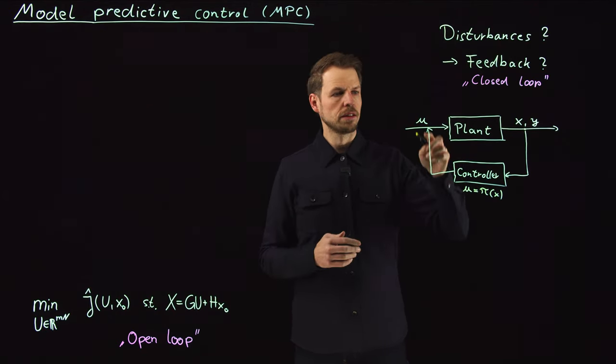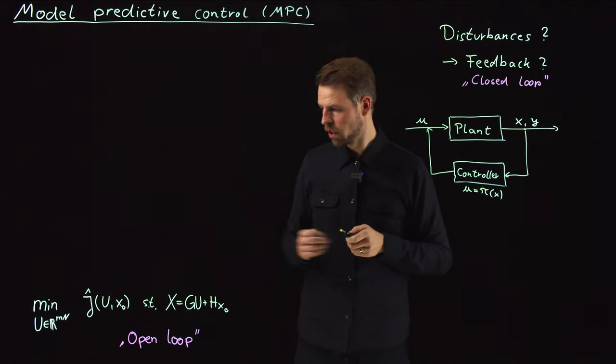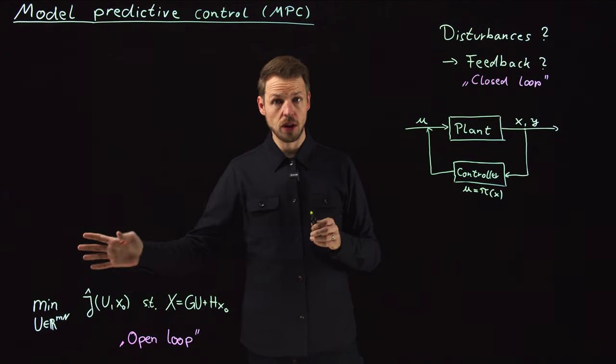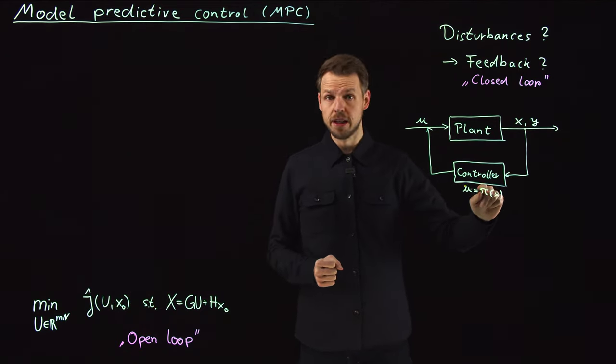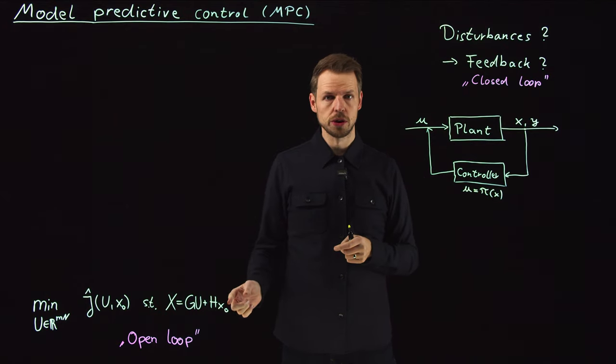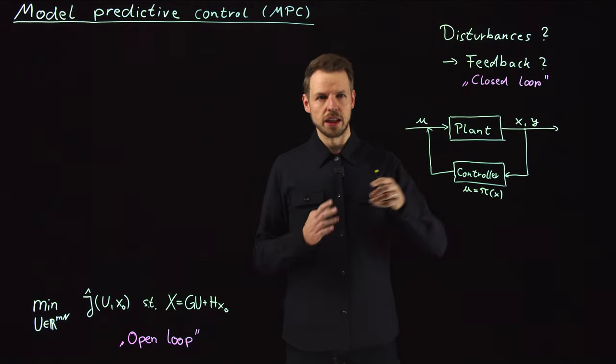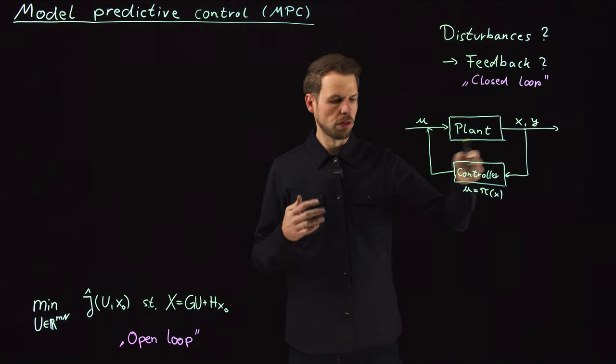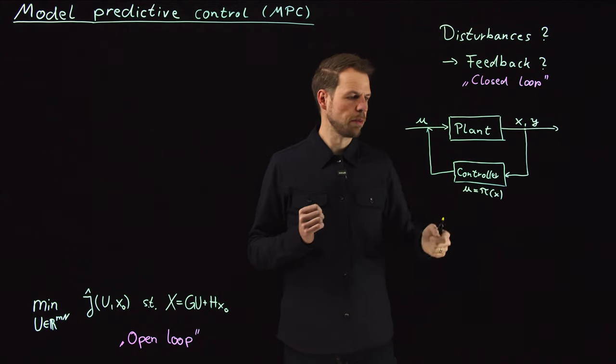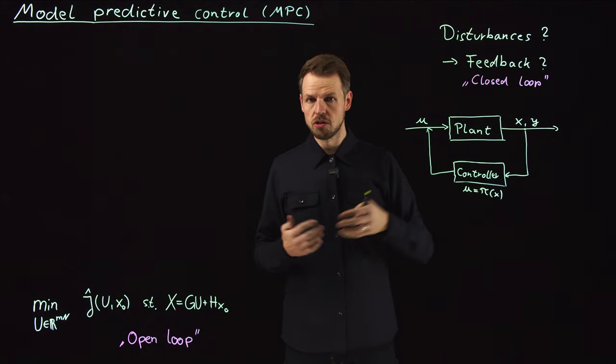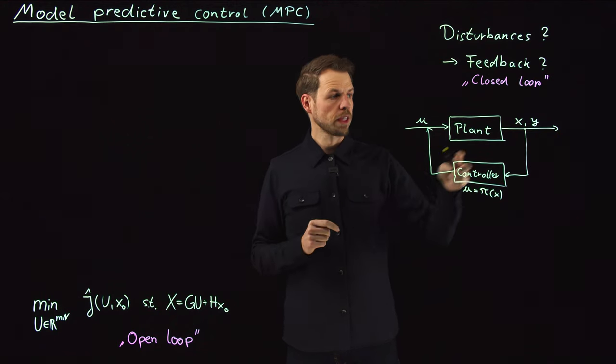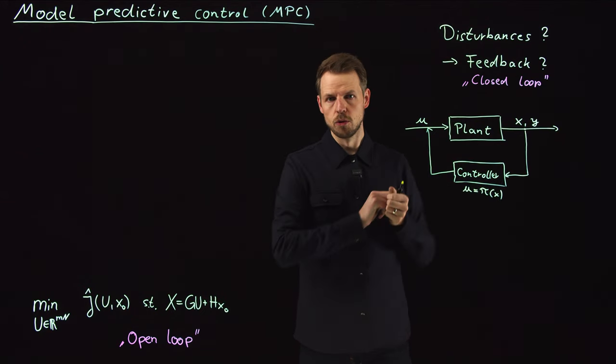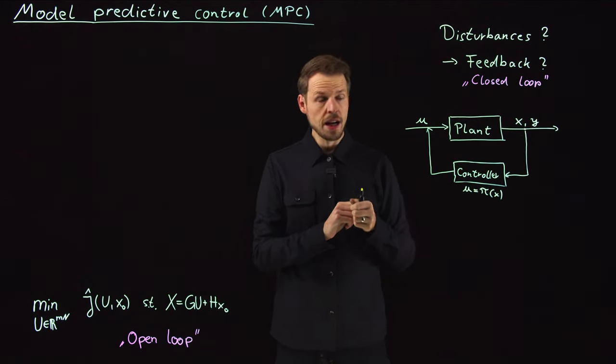And so this is what we mean by closing the loop or receiving a feedback signal. And in this way, we can account for inaccuracies. Whereas we had here our initial state x_0 and then had to determine a very long trajectory, we here can update our initial condition, if you wish, and then account for this inaccuracy by not looking into the future for infinitely large time steps or infinitely many time steps, but just taking a decision on a short horizon, maybe one step, and then receiving a feedback that synchronizes our model with the truth.